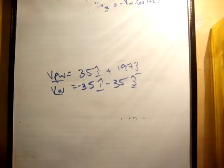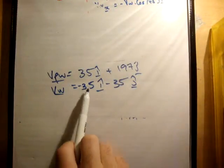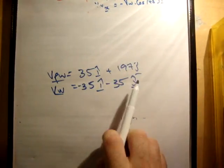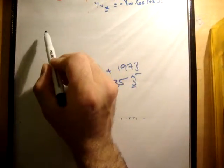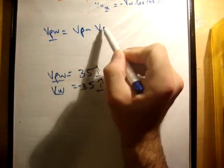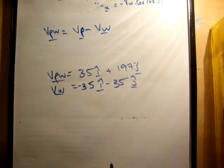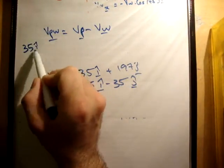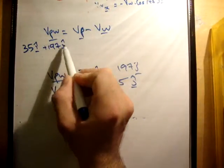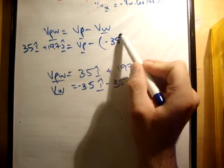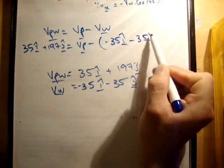Now does that make sense? The answer is it does, because if you look at this, these two here cancel out, giving a 0 overall i hat unit vector velocity. So the next thing we need to do is, finally, we say we know that VPW is equal to VP minus VW. So we can just plug in what we know, so we have 35 i hat plus 197 j hat is equal to VP minus 35 i hat minus 35 j hat.